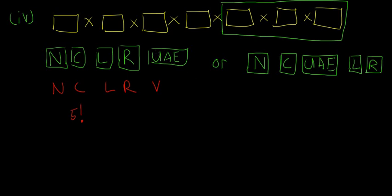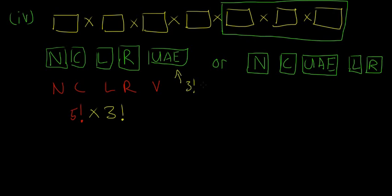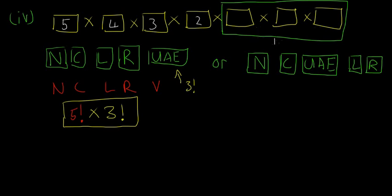The vowels U, A, E inside the block aren't fixed — you could also have U, E, A or loads of other combinations. So we have to multiply by three factorial for the internal arrangements of the vowels. The answer is five factorial times three factorial. Using the box method: five, four, three, two, one for the outer arrangement, and three, two, one inside the vowel block.